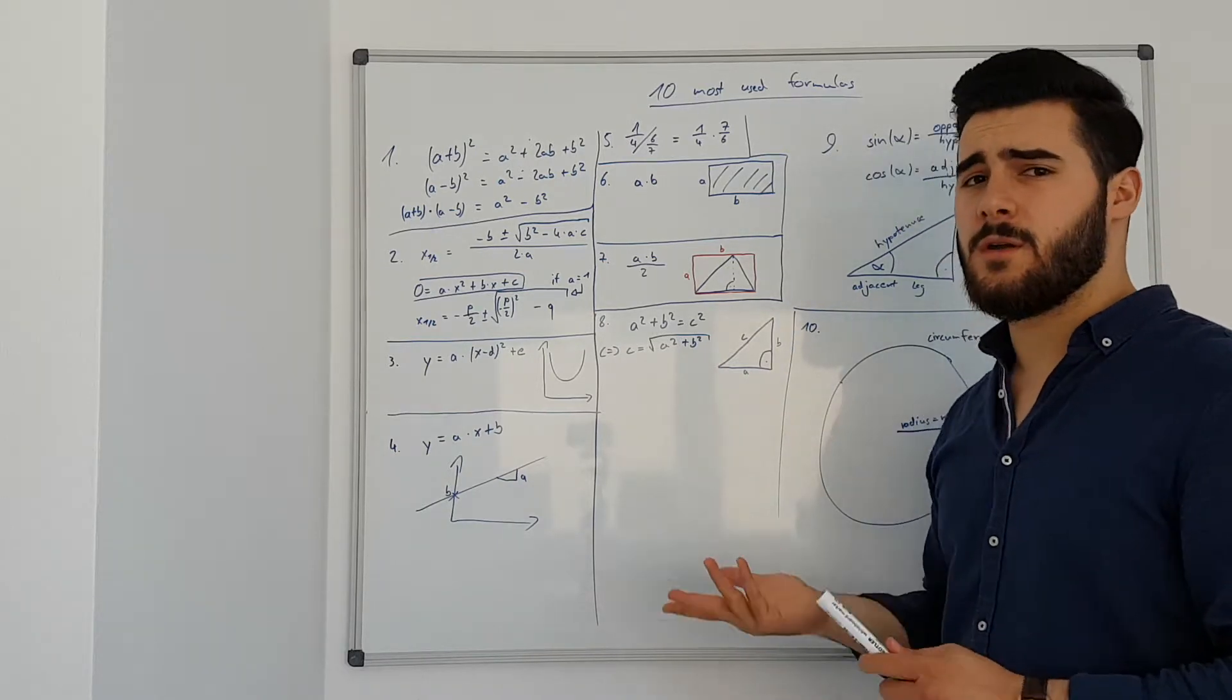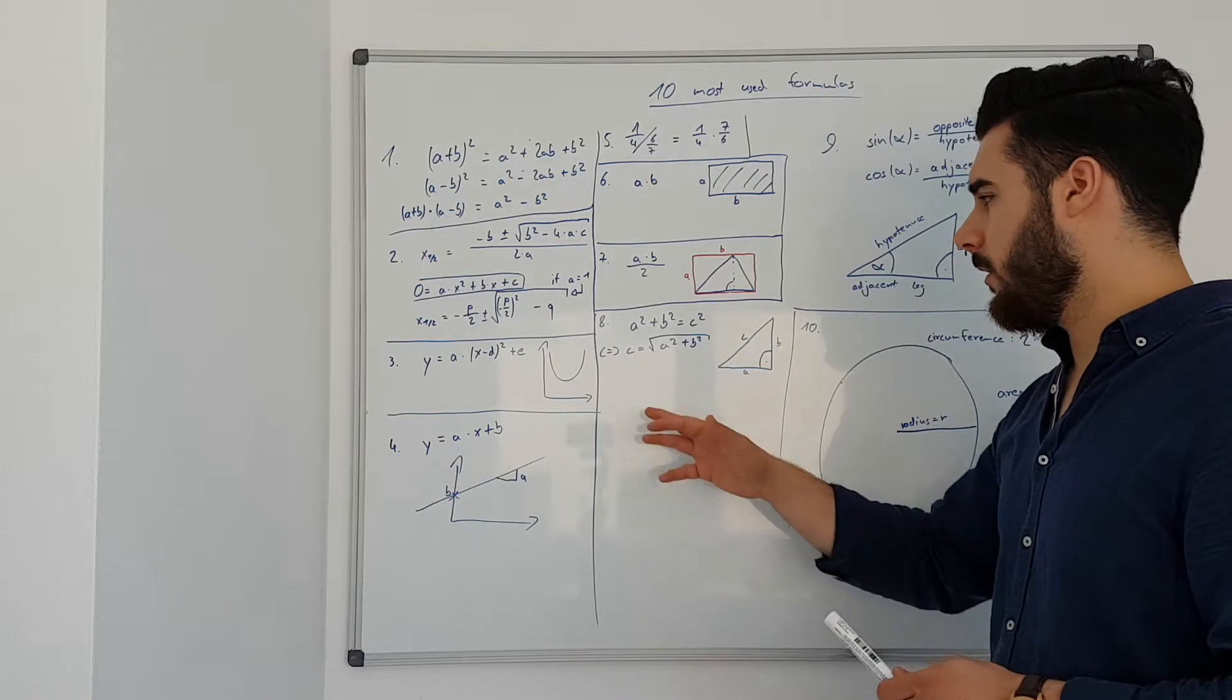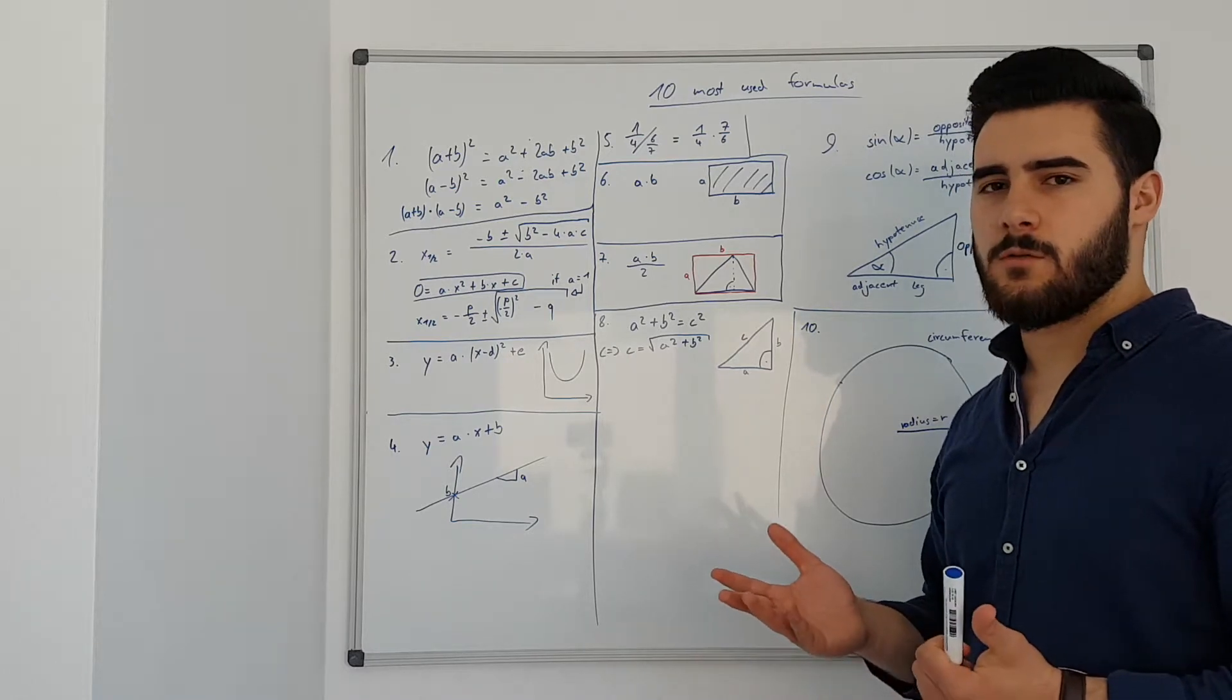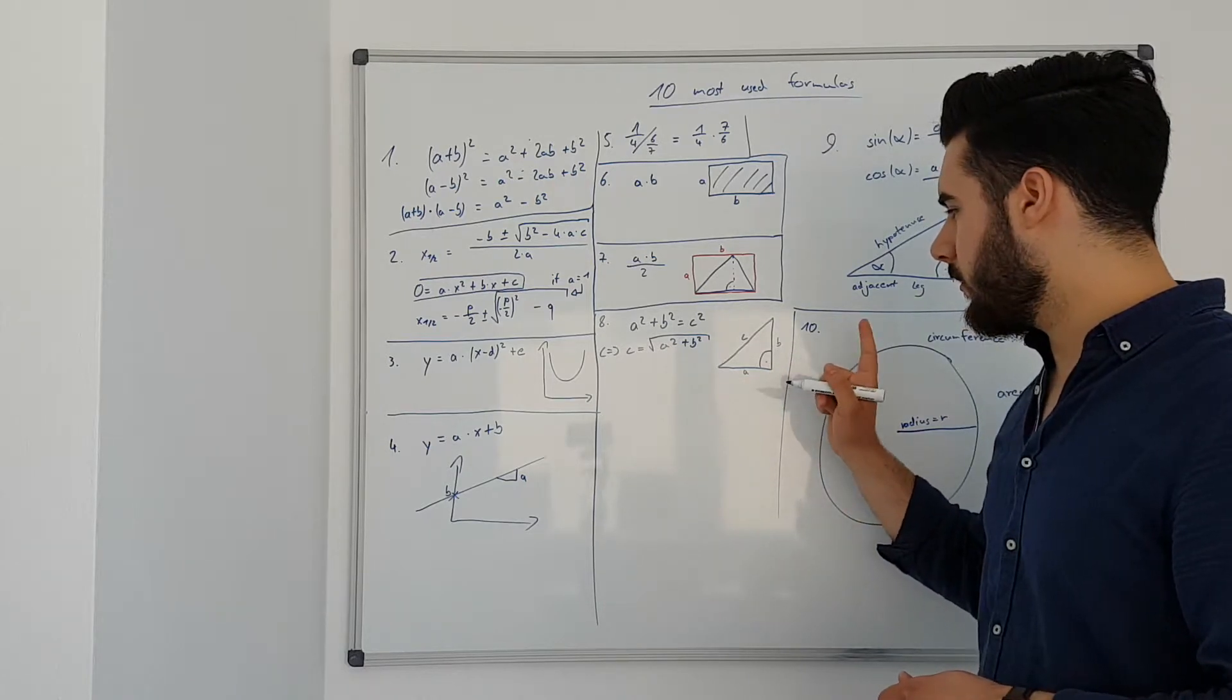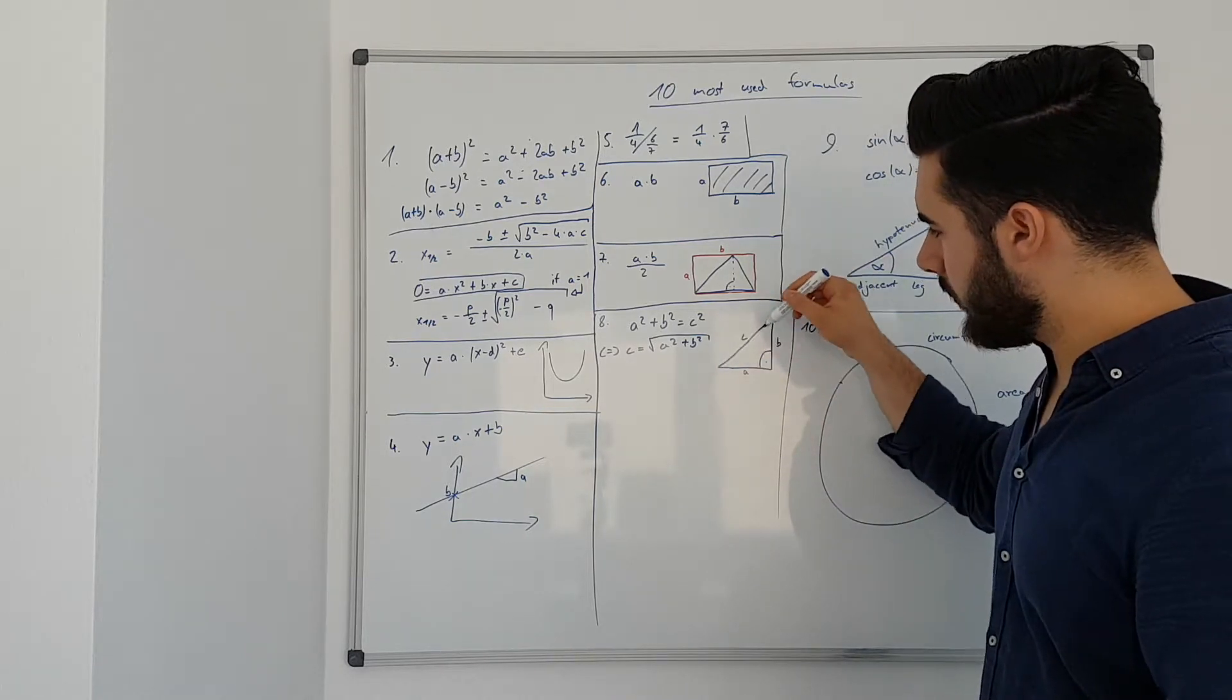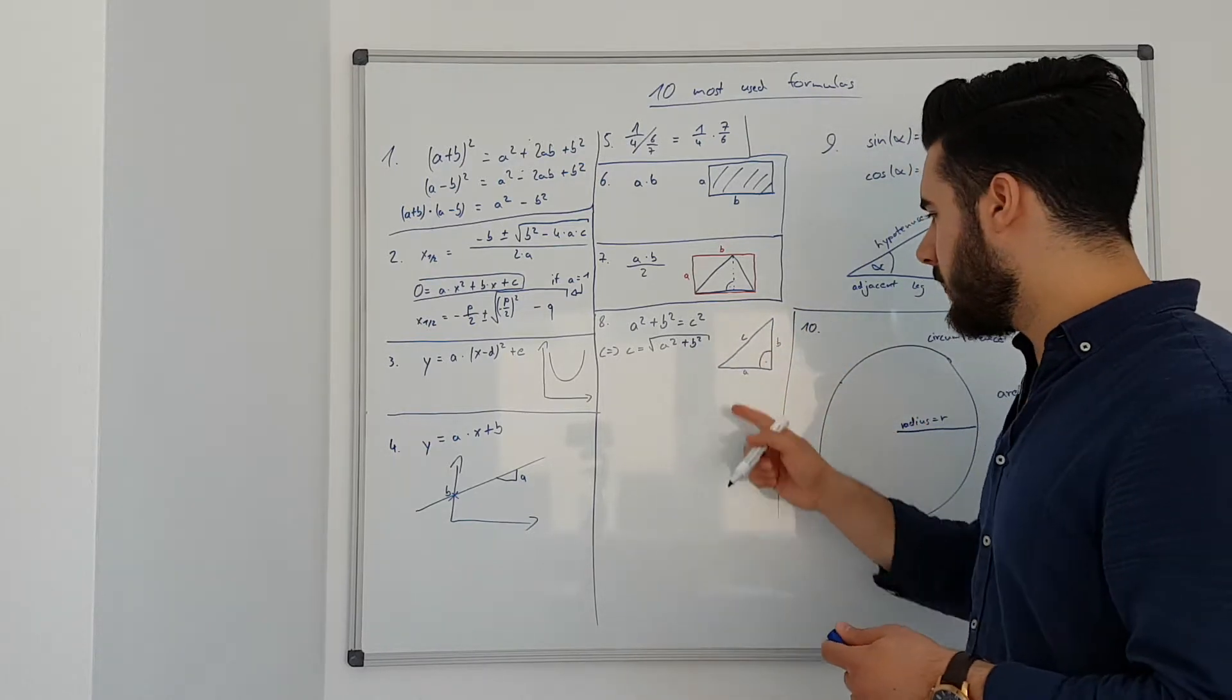Another formula for triangles which you probably might know is the Pythagoras Theorem formula, a squared plus b squared equals c squared. What you have to remember is that this only works for triangles with the right angle. So if you have a right angle, the side or the leg that is on the other side of the triangle is then basically your hypotenuse, so your c.